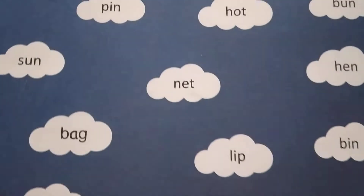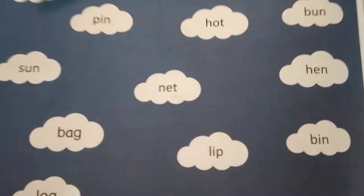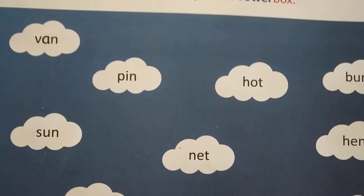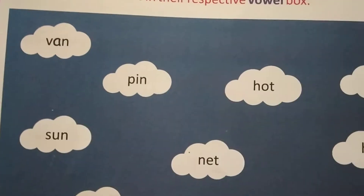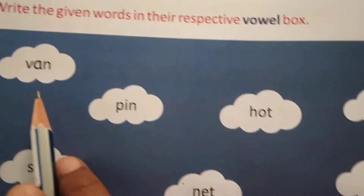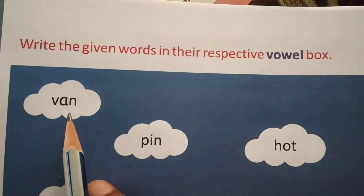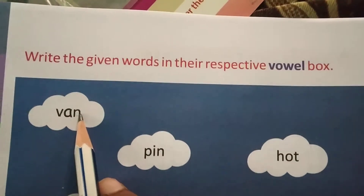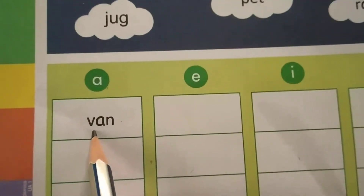Now find A-vowel words. Find the word, Nana — A-vowel, A is there. You should find that word. See here: V, A, N — fan. So A is there, so you should write here. Here it is already written.